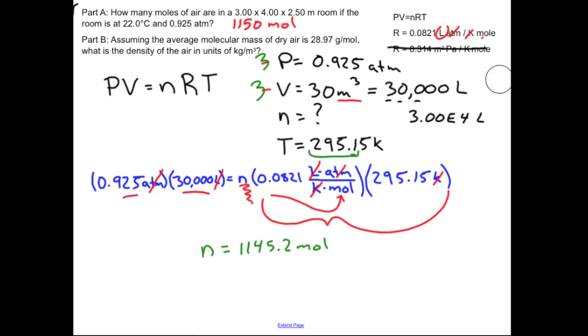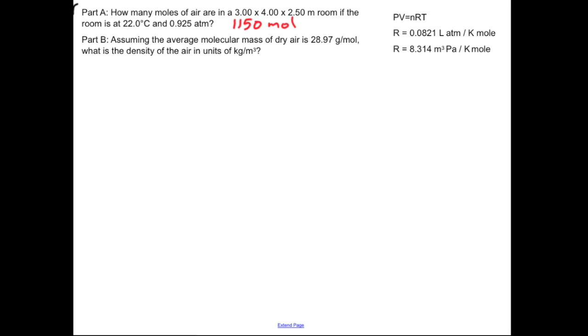Now let's go ahead and move on to B. B asks us to find the density of the air in units of kilograms per meter cubed. There's a couple ways you could do this. Let's look at PV equals nRT. I know that molar mass is equal to grams per mole, so that's the mass per n moles, which means n is equal to m over molar mass.